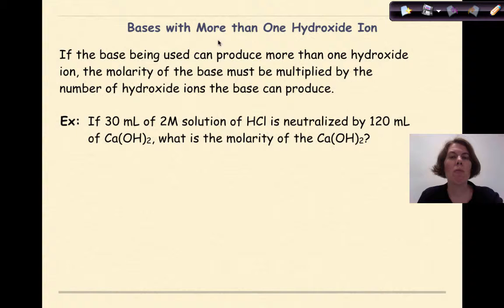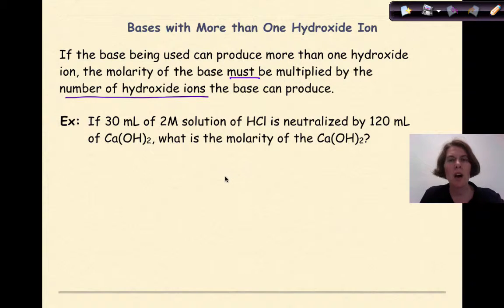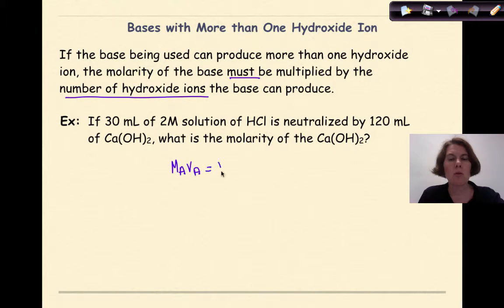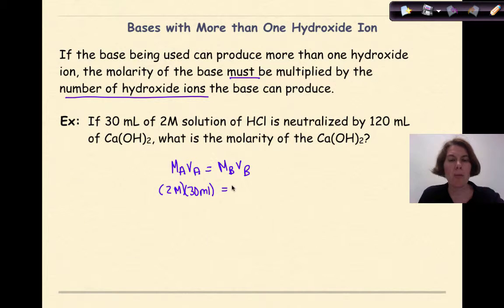Now let's look at a situation with bases that have more than one hydroxide ion. If the base being used can produce more than one hydroxide ion (OH⁻), the molarity of the base must be multiplied by the number of hydroxide ions the base can produce. For example: if 30 milliliters of a 2 molar solution of HCl is neutralized by 120 milliliters of Ca(OH)₂, what's the molarity of the Ca(OH)₂? Write the formula: MA times VA equals MB times VB. The molarity of the acid is 2 molar and the volume of the acid is 30 milliliters.